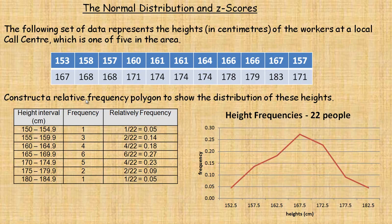We're supposed to construct a relative frequency polygon to show this distribution. I categorized into seven bins here. Notice that the lowest height is 153, so I went 150 to just under 155, 154.9. And then the upper 150s, lower 160s, upper 160s.